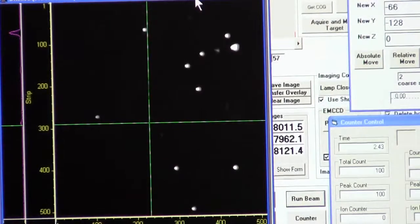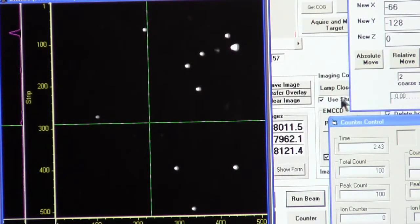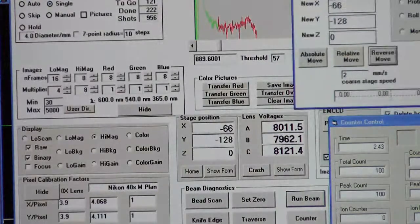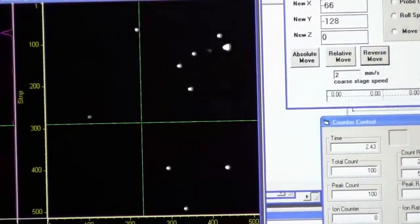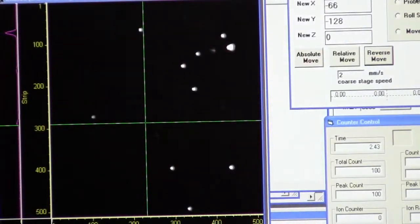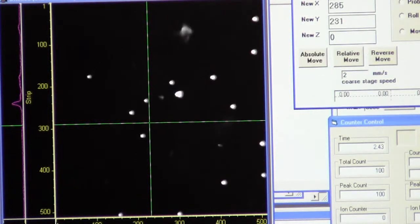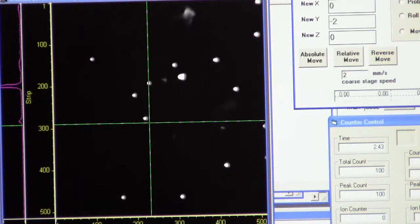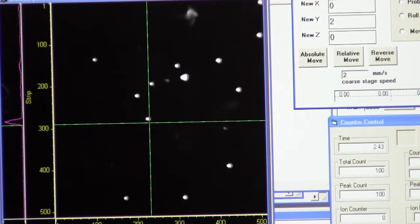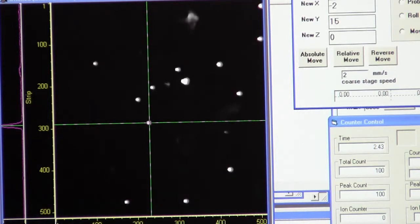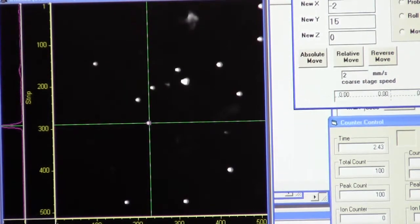So what we want to do is put one of these beads at this crosshair position. So I guess I'll move this one down there. So that's about in the position where we expect the beam to be and what we're going to do now is switch lenses on the microscope.